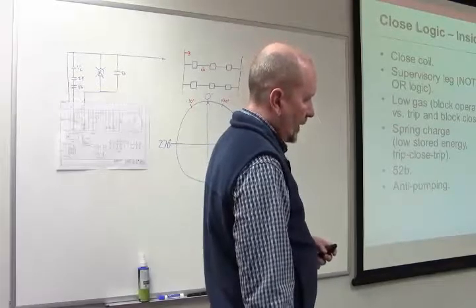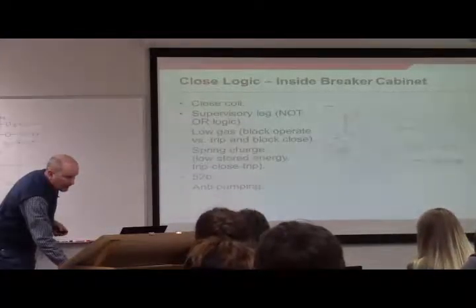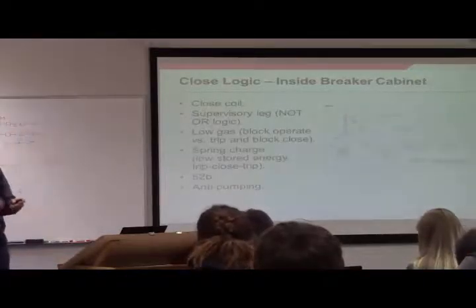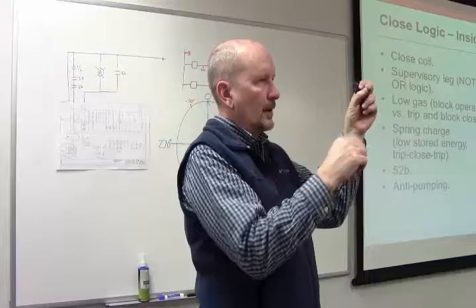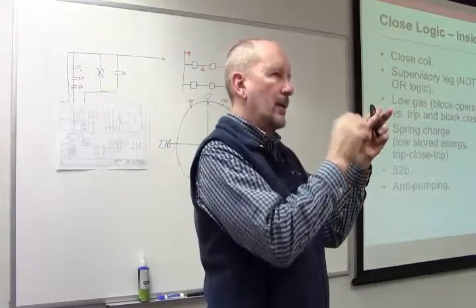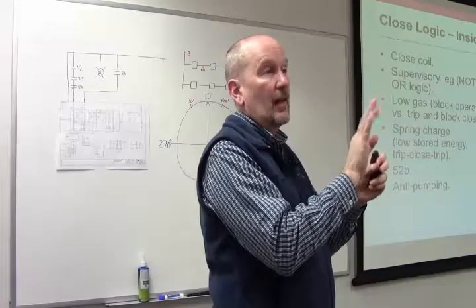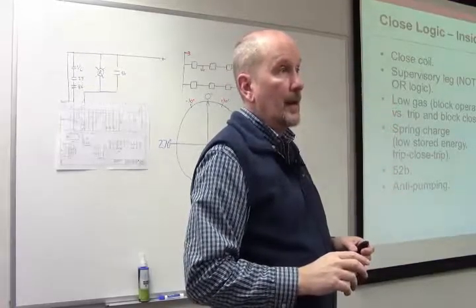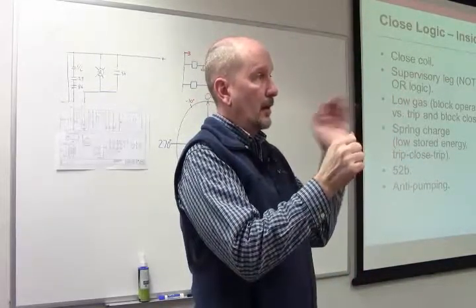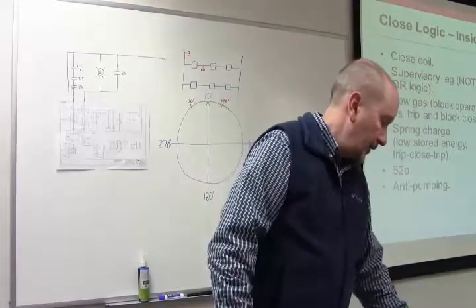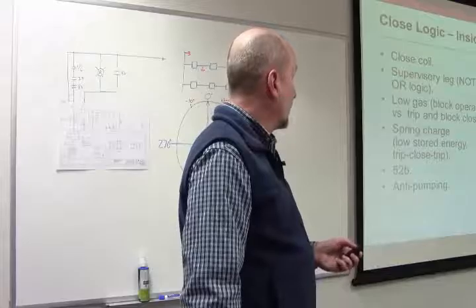And then we talked last week about the anti-pumping scheme. It's located right over here. When you close the breaker but you still have DC applied to that circuit, it's going to prevent that from going to the closed coil and stay locked in until you remove DC from that circuit. It'll prevent you, if you have a standing close and a standing trip from closed trip, closed trip, closed trip on the circuit breaker. Besides wreaking havoc on the electrical system, it's also going to damage the breaker.